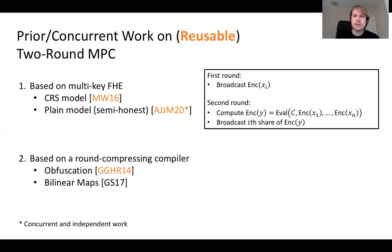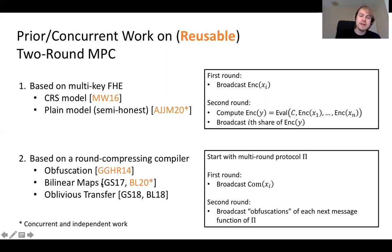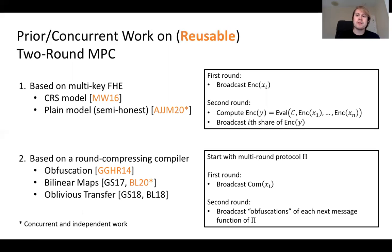A second paradigm is based on a round-compressing compiler approach, first shown in work by GGHR, where they instantiate it based on indistinguishability obfuscation. Since then, the assumptions needed have been improved — first to bilinear maps and later to the minimal assumption of two-message oblivious transfer. A concurrent independent work by Ben Hamouda and Lin shows how to make the bilinear map-based approach reusable. Before their work, using this round-compressing compiler approach, reusability was only known using the strong primitive of IO.